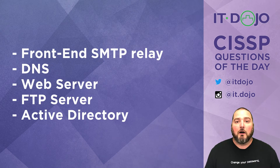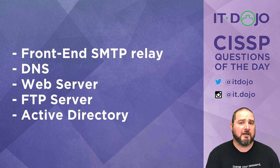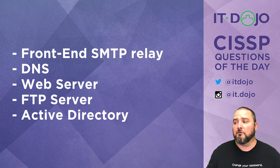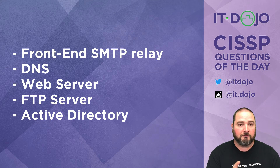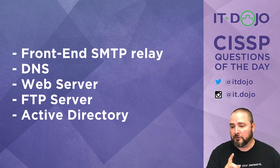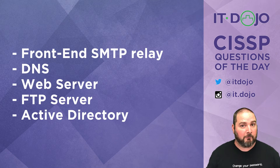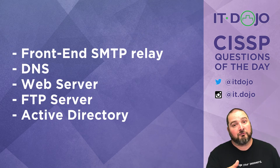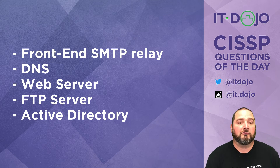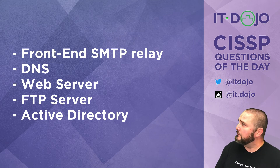Looking at the answer choices — a front-end SMTP relay: all day long we find these in the DMZ. Email comes from the internet into the SMTP relay, which looks for spam, viruses, and other inappropriate content, filters it out, and then forwards it to an internal server to be queued for delivery.